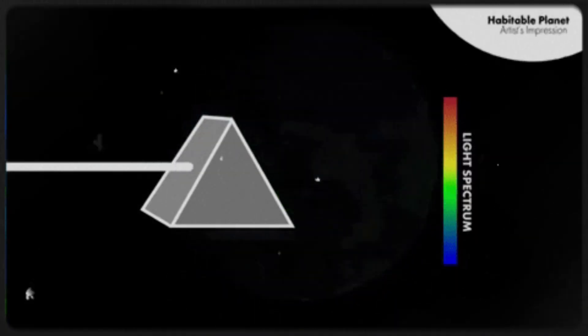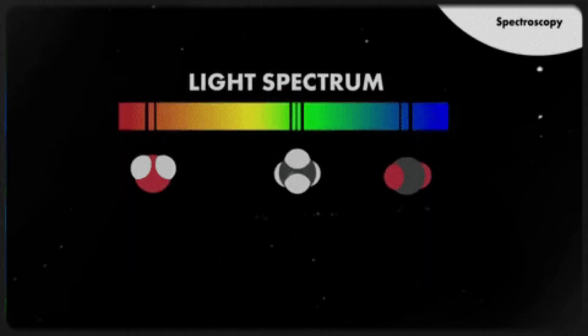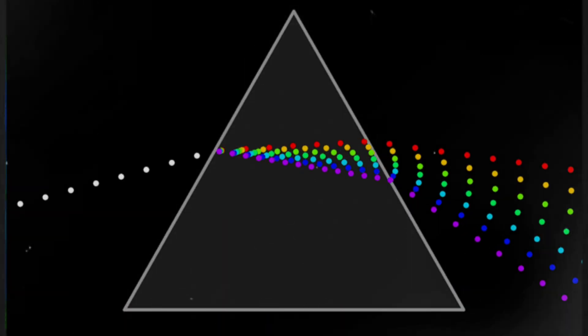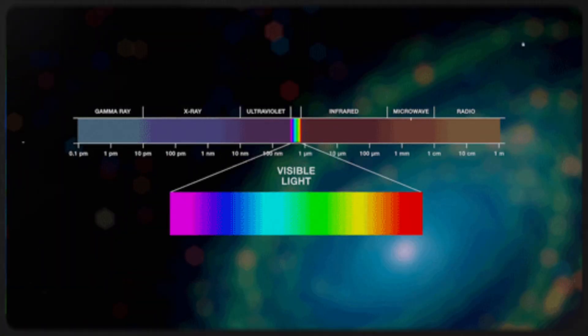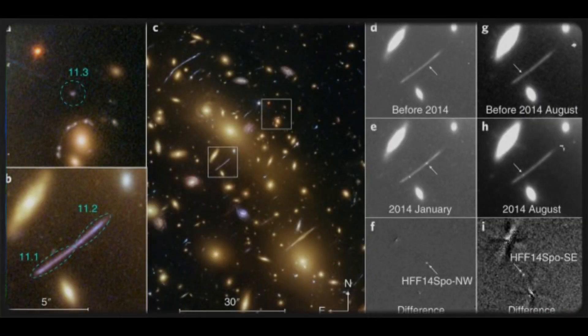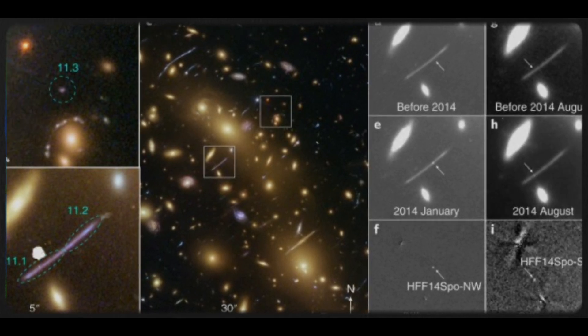By analyzing this light, known as spectroscopy, astronomers can gain deep insights into the chemical composition, age, and movement of these massive cosmic structures. Not only does this reveal the galaxy's authenticity, but it also provides essential information about their size and precise location in the universe.